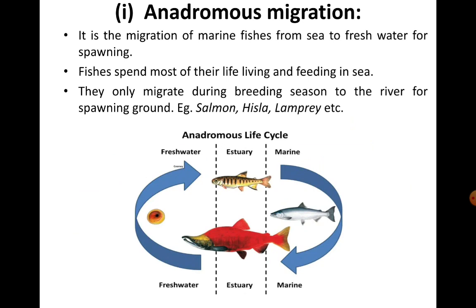In anadromous migration, marine fishes migrate from sea to fresh water for the purpose of spawning. Fishes spend most of their life living and feeding in the sea, and they only migrate during the breeding season to rivers for spawning. Examples of anadromous migration include salmon, hilsa, and lamprey. They live and feed in ocean water and migrate to fresh water for spawning; the larval forms then migrate back to their parental feeding habitat, and hence this cycle continues.